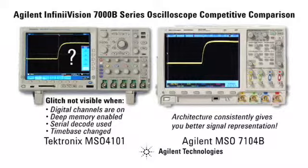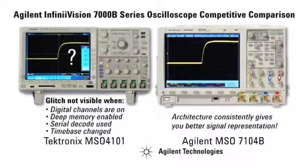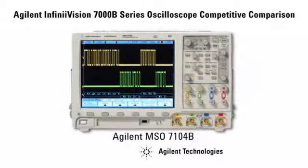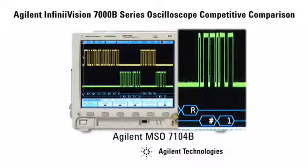Adding digital signals and serial decode capabilities to your scope should help you find problems, not mask them. Agilent's MSO architecture gives you the best chance to find problems quickly, with deep memory always enabled and update rates always maximized.